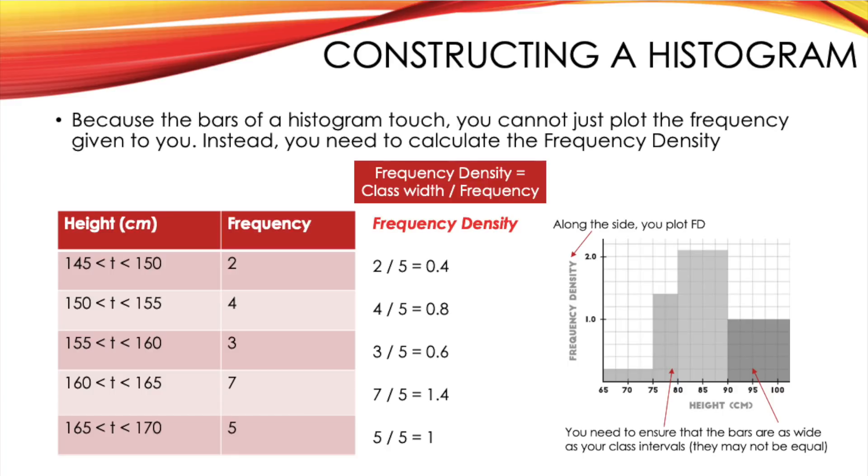For example on the histogram shown on screen you will see that the majority of the bars are across a 10cm width. However the second bar only spans across 5cm, and so this would have just reflected the different class widths shown within the original table.